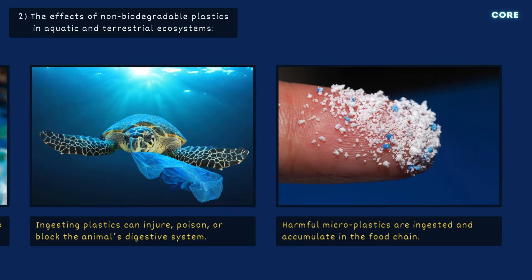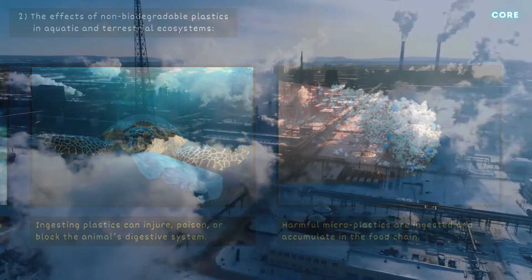Over time, plastic breaks down into smaller fragments called microplastics, which are consumed by a wide range of organisms and accumulate in the food chain.